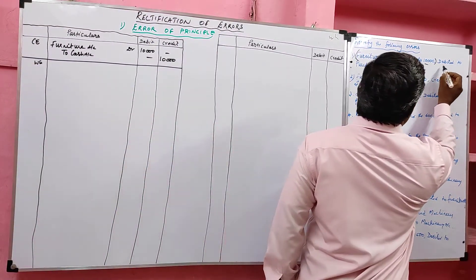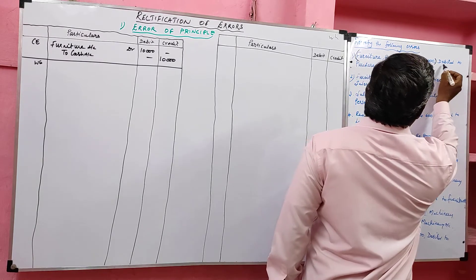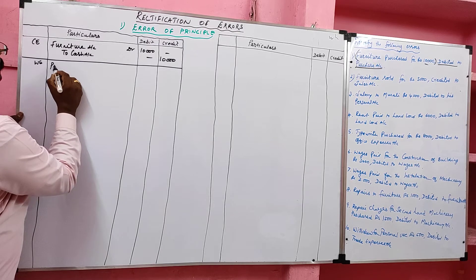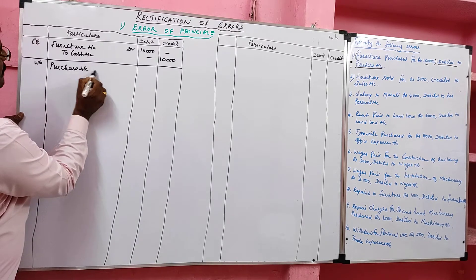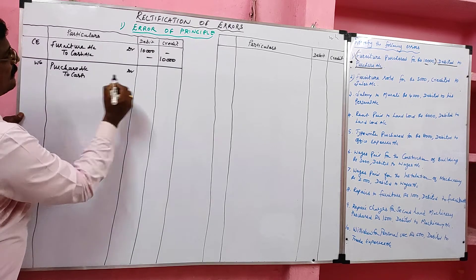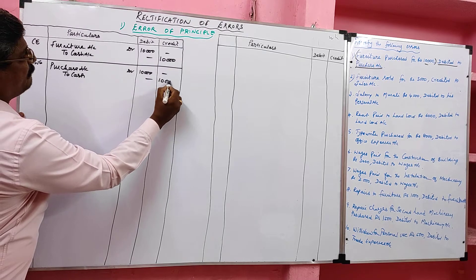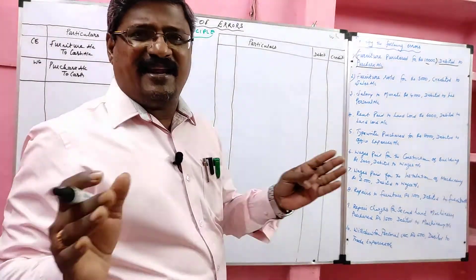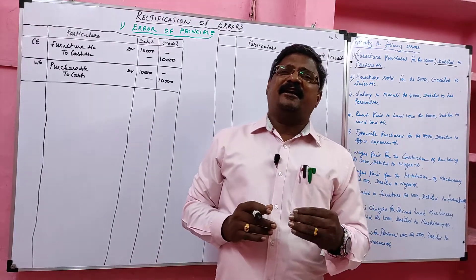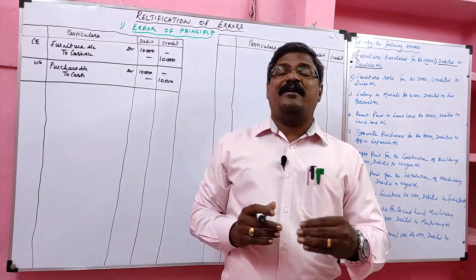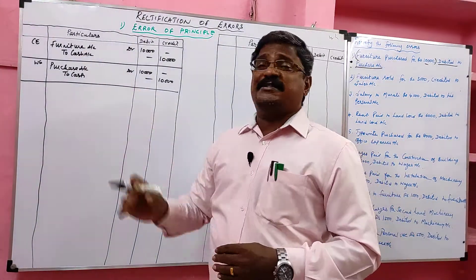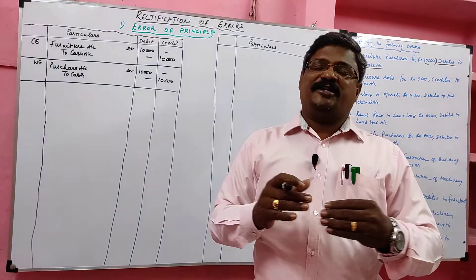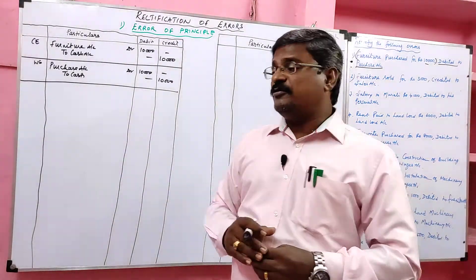For furniture purchased for 10,000, the entry should be furniture account debit to cash, but debit was given to purchase account instead. So the wrong entry recorded was: purchase account debit to cash 10,000. Furniture is a real account; purchase is a nominal account. Instead of recording capital expenditure, they recorded revenue expenditure. This is called error of principle.